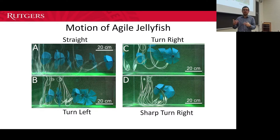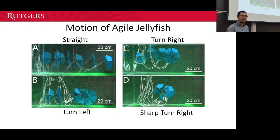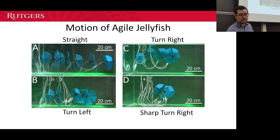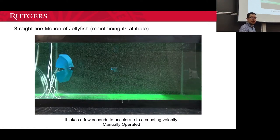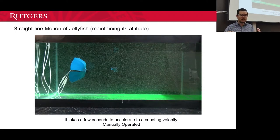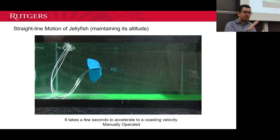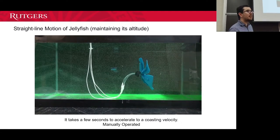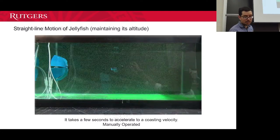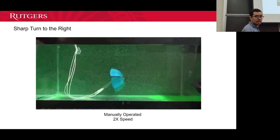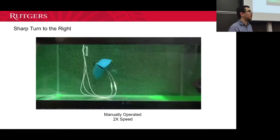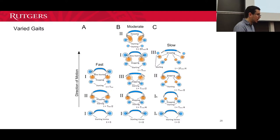Before Kevin graduated he also worked on an agile jellyfish. Instead of one input, he now had three inputs. Applying pressure to all of them with this manually operated jellyfish, he was able to get it to move straight. By actuating two flaps on one side more than the other, he was able to get it to change direction. That's where we were up to around 2017 — he defended in 2016.